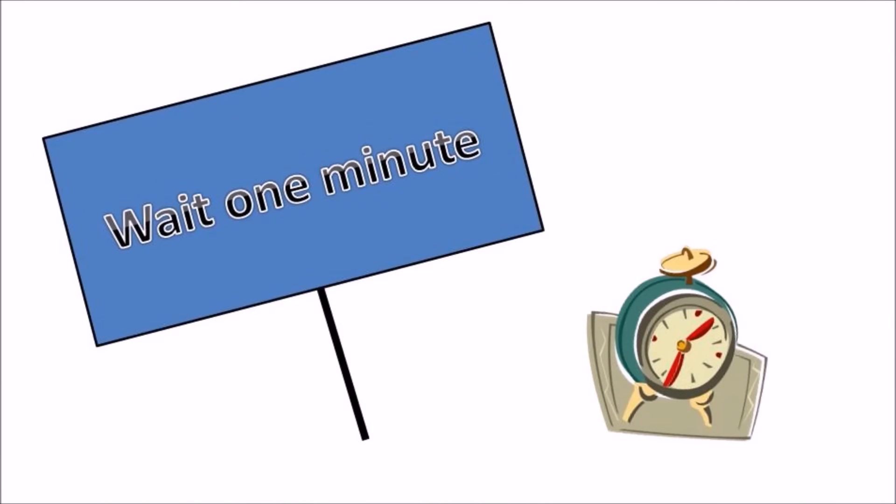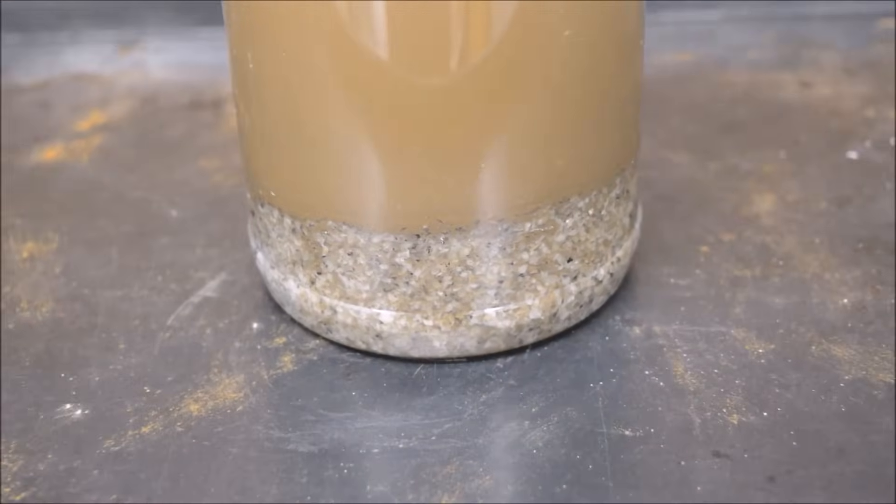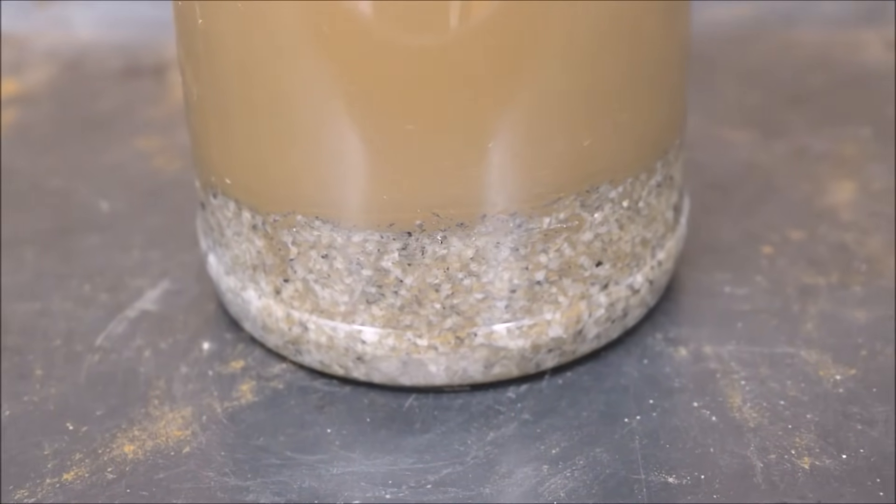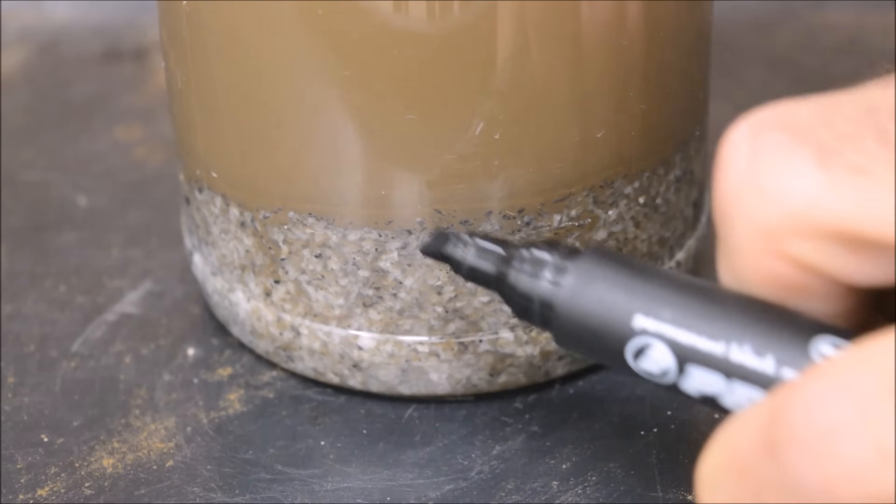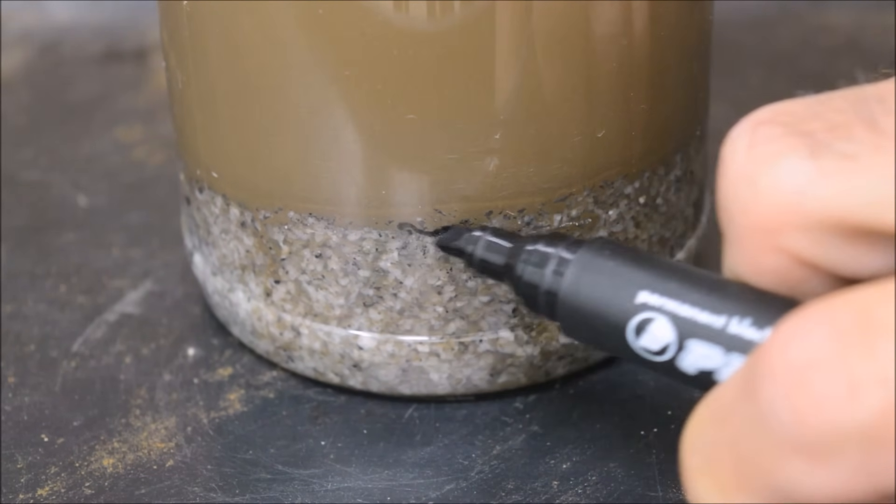Let the jar sit for one minute. Since sand is heavier than silt and clay, it settles in less than a minute. The sand has now settled to the bottom of the jar. Take a marker and draw a line at the top of the sand layer.